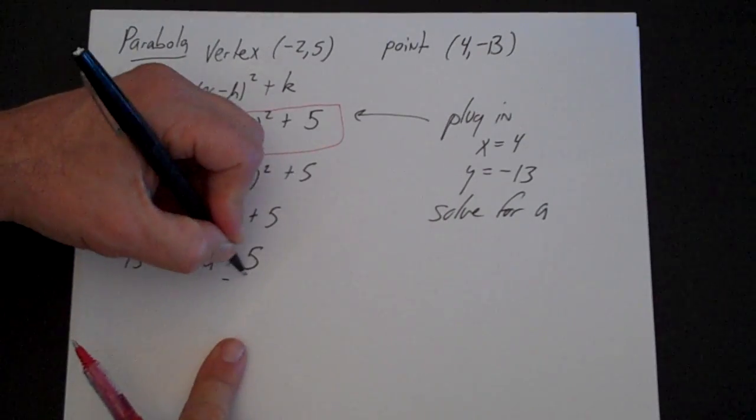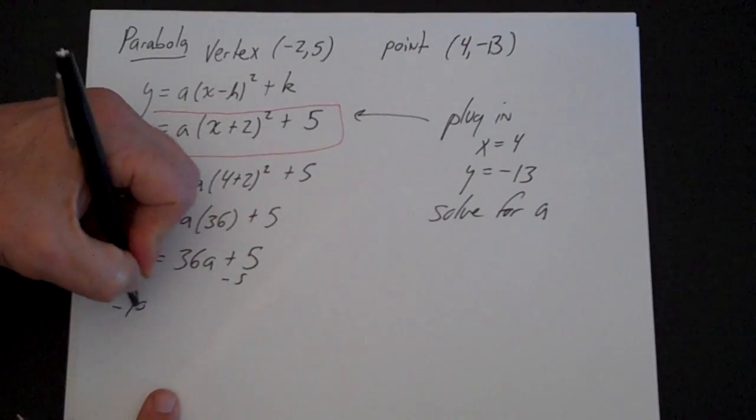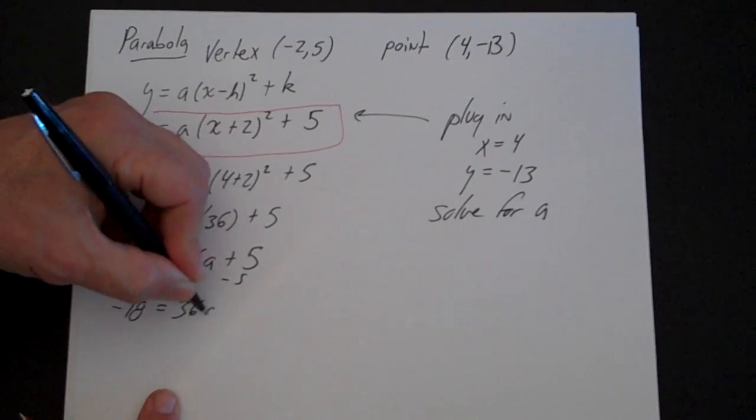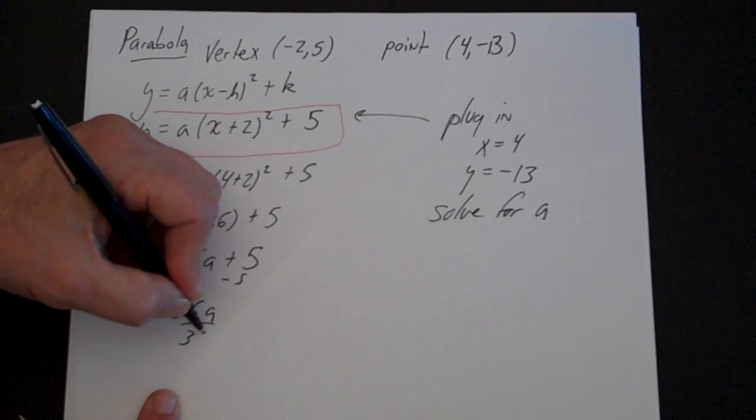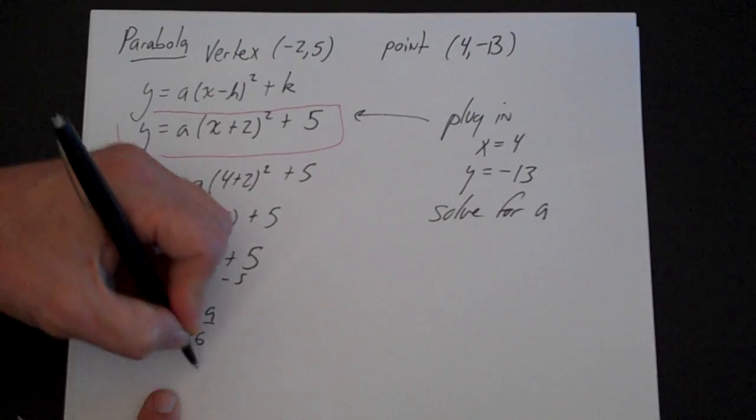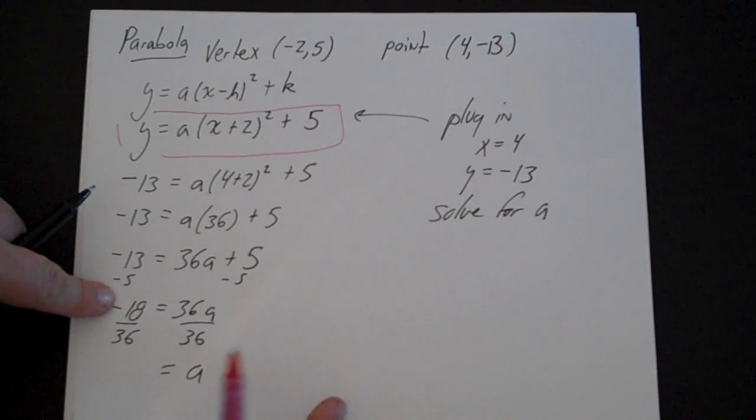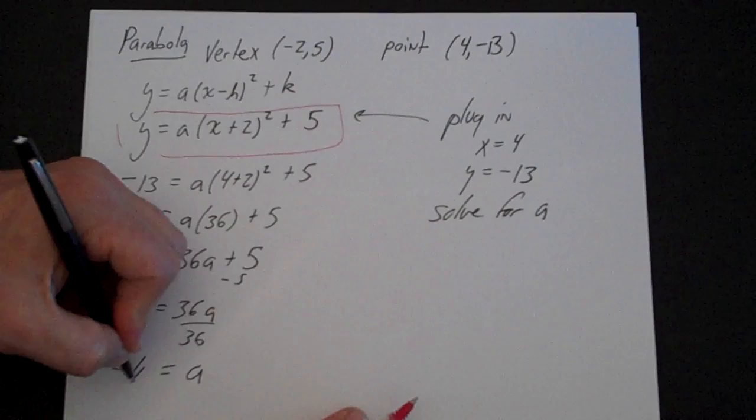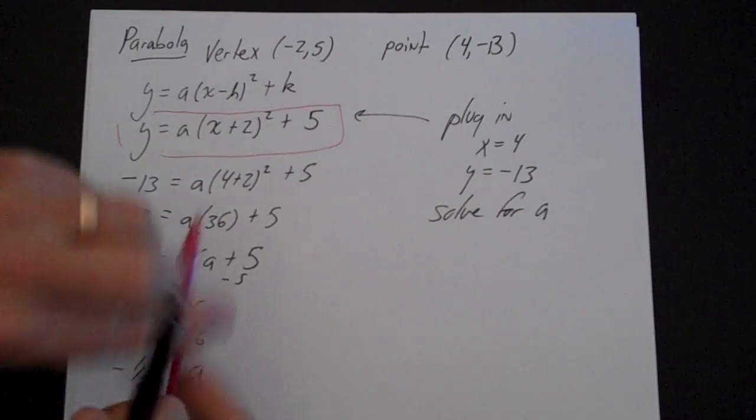I subtract 5 from both sides. I get -18 = 36a, divided by 36. a is equal to, let's see, -18 divided by 36 is going to be -1/2. Now I know a.